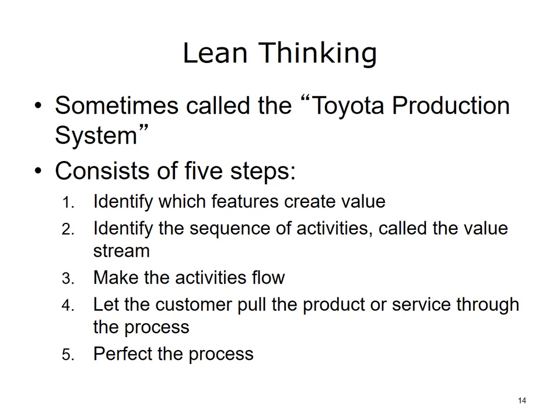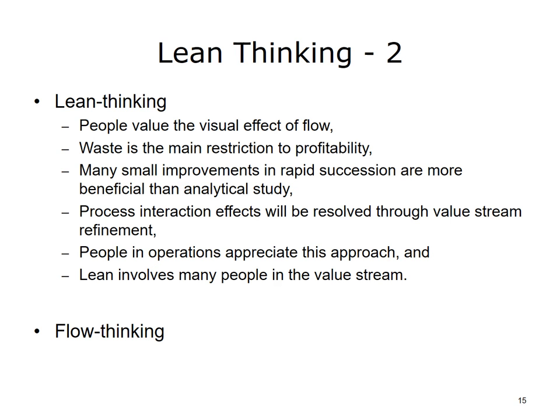Some institutions have implemented Lean using an on-site trainer from industry. Assumptions underlying Lean thinking are: people value the visual effect of flow; waste is the main restriction to profitability; many small improvements in rapid succession are more beneficial than analytical study; process interaction effects will be resolved through value stream refinement; people in operations appreciate this approach; and Lean involves many people in the value stream. Transitioning to flow thinking causes vast changes in how people perceive their roles in the organization.